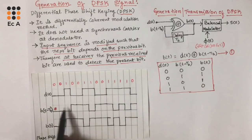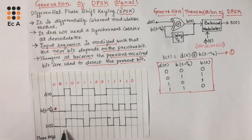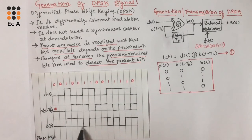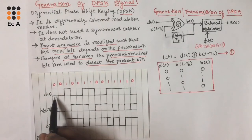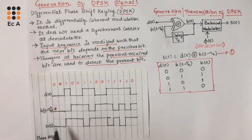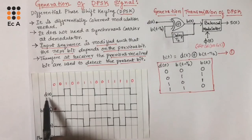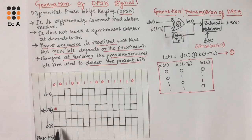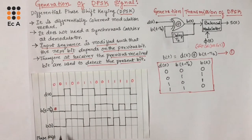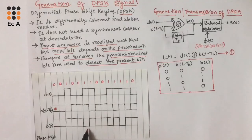From this waveform, it is clear that B(t - Tb) is the delayed version of B(t) by 1 bit period. This is the output sequence produced by the input sequence D(t), so B(t) is the modified version of the input sequence D(t). Based on this sequence, there will be a phase shift in the carrier signal.